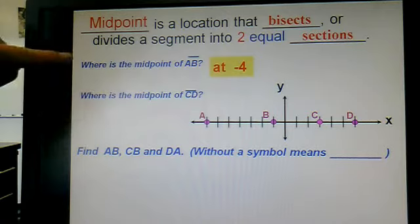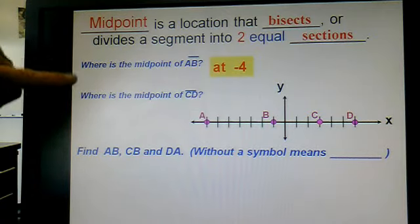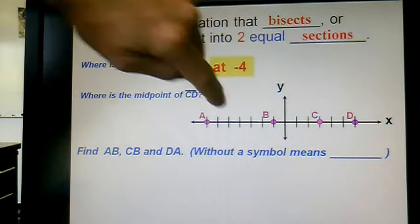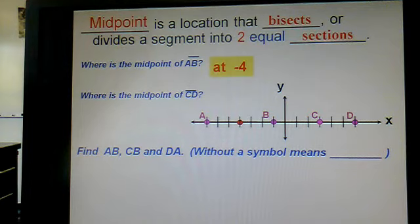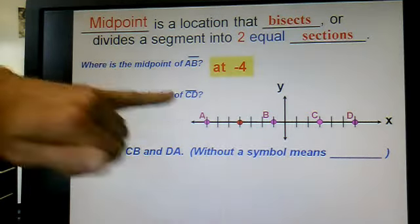So these two questions are asking for a coordinate, like a location. So four to the left is your midpoint of AB, which, you know, that little red dot should make sense. Again, you might want to pause now if you got that one wrong and redo this one, see if you get this one right.